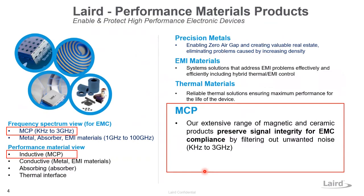This is an overview of Laird performance materials. MCP is part of that portfolio. Laird offers a range of different materials to enable and protect high-performance electronic devices. Unlike other precision metal EMI materials and thermal materials, MCP aims to preserve signal integrity for EMC compliance. From the frequency spectrum view, MCP focuses on the kilohertz to 3 GHz application range.